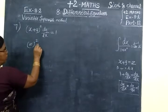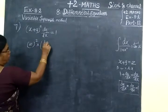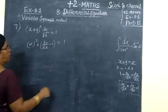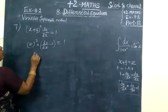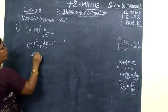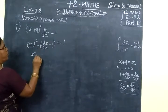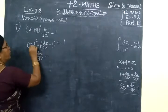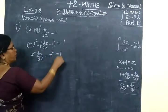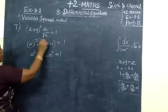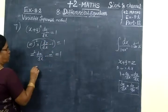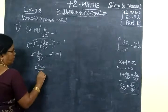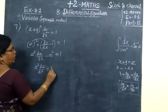So z²(dy/dx) becomes z²(dz/dx - 1) = 1. Expanding: z²dz/dx - z² = 1. Taking z² to the other side: